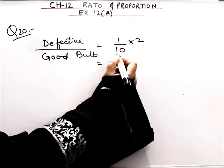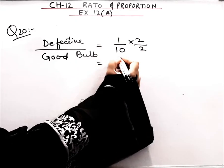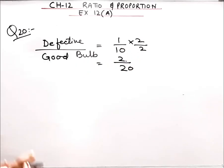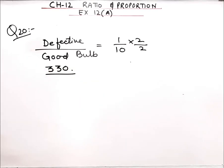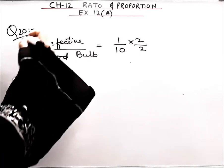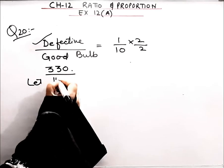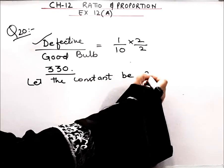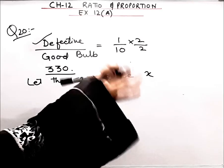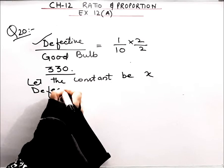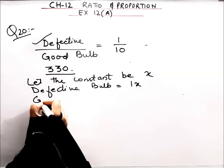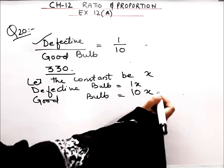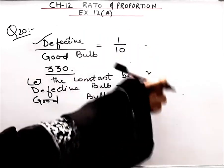Suppose I multiply by 2 — if 20 good bulbs are made, then 2 are defective. In one hour, a certain number of bulbs are produced and we need to find the number of defective bulbs. So let the constant be x — we don't know what to multiply by. Defective bulbs = 1 into x = x, and good bulbs = 10 into x = 10x.